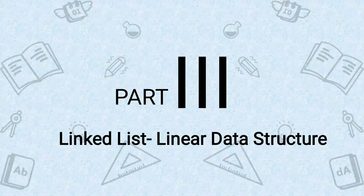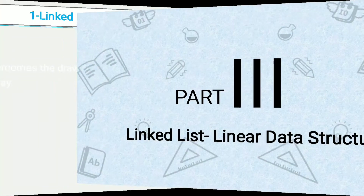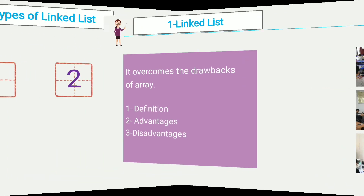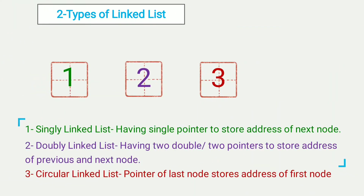In part three we will learn linked list, which is also an example of a linear data structure. In the first video we will learn how linked list overcomes the drawbacks of array, covering definition, advantages, and disadvantages of linked list. In the second video we will learn types of linked lists.